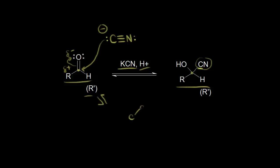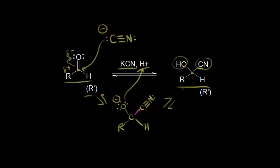We now form a carbon-carbon bond, with this carbon triple bonded to a nitrogen. Following our electrons, those electrons form this new carbon-carbon bond. On the left side we have our oxygen with three lone pairs of electrons, giving it a negative one formal charge. If we started with an aldehyde we'd have an R and an H. In the final step, all we do is protonate our oxygen — a lone pair picks up a proton to form an OH — and we've formed our cyanohydrin product.